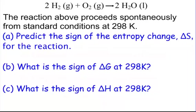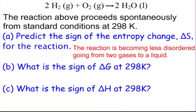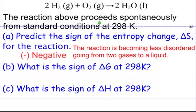Let me give an example. We have two moles of hydrogen gas plus one mole of oxygen gas giving us two moles of liquid water. This reaction proceeds spontaneously at standard conditions at 298 Kelvin. Part A asks us to predict the sign of the entropy change, delta S, for the reaction. Are we going towards more disorder or less disorder? We're going towards less disorder — we're going from two gases with a lot of disorder to a liquid, something more ordered. So our delta S is going to be negative.